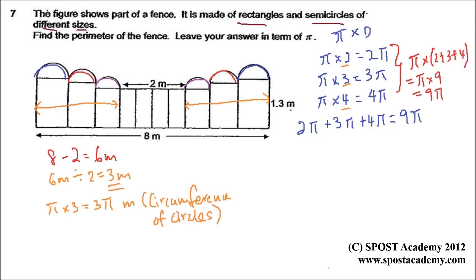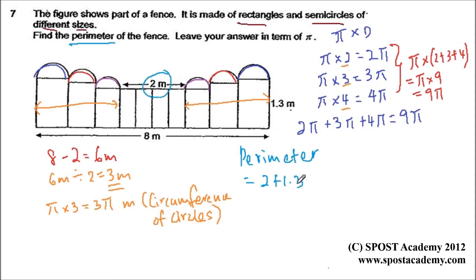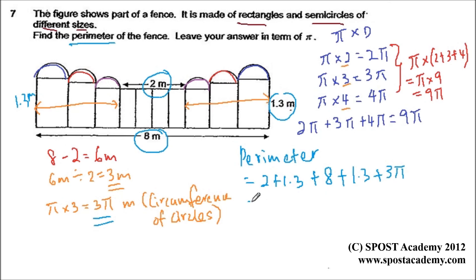The next step — since the question asks us to find the perimeter, I will add up all the lengths together with the circumference of the circle. So the perimeter is 2 meters plus 1.3 meters plus 8 meters plus another 1.3 meters, plus the total circumference of the circles which is 3pi. This gives us a total of 12.6 plus 3pi meters.